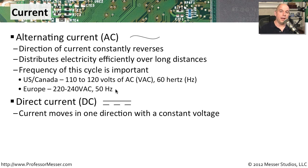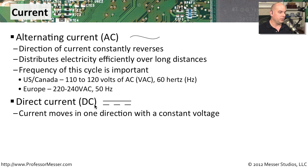You'll also see power supplies refer to direct current. Direct current is usually what we're converting from AC power inside our power supply. Direct current is a constant voltage — it's not changing direction constantly, and it's very consistent. DC is referred to with straight lines with little connections along the bottom. We take alternating current from the wall into our power supply, which converts it to direct current.